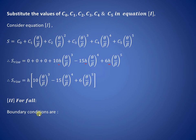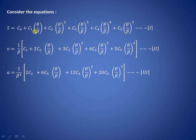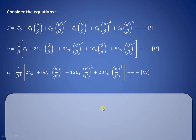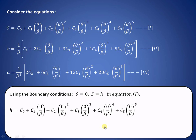For fall motion (return stroke), the follower starts in the raised position. When theta=0, displacement equals h, velocity is 0, and acceleration is 0. When theta=beta, displacement becomes 0, and velocity and acceleration are also 0. Applying theta=0, s=h in equation 1: all theta-terms vanish, giving c0 = h.